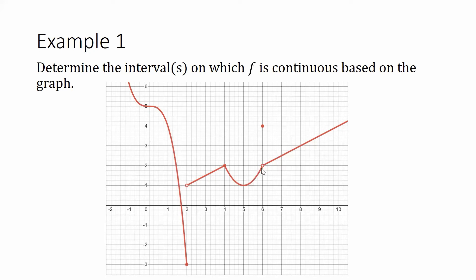We're continuous from 2 through 4 and all the way up until x equals 6. When x approaches 6, both the right-hand and left-hand sides approach the point (6, 2), so the limit exists and equals 2. However, if you plug in 6 into the function you get the point (6, 4). Since the limit exists but is not equal to the value of the function, the function is not continuous at x equals 6. The function is continuous from 6 and beyond.